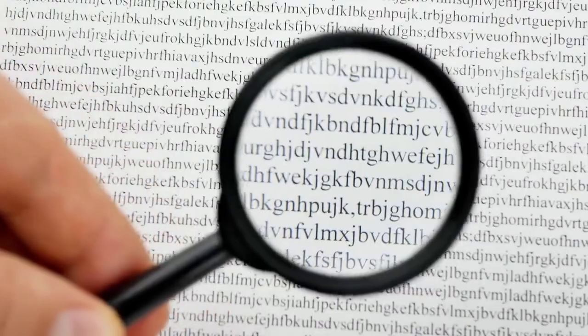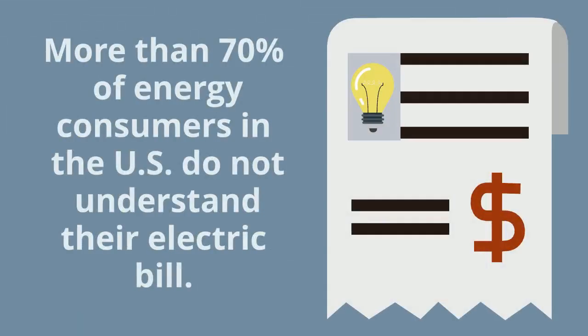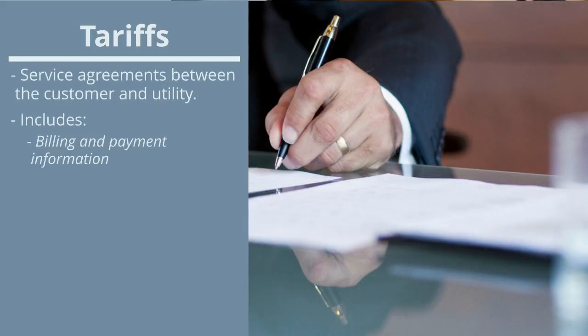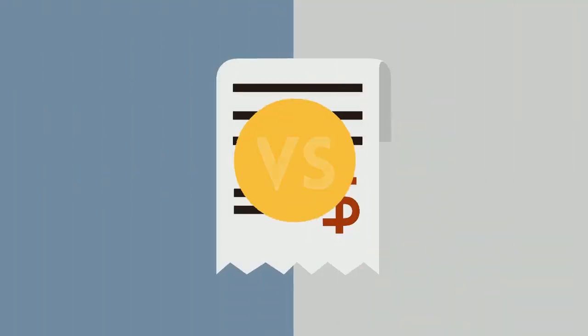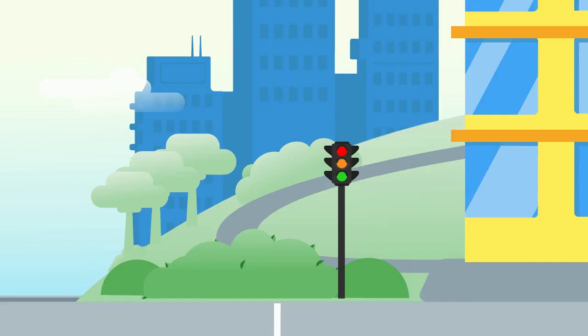While looking at an electric bill, have you ever wished for a decoder? Well, you're not alone. Electric bills are confusing because there is a lot in them, all of which is linked to a type of service agreement called a tariff. For simplicity, let us focus on the metered items: energy and demand.